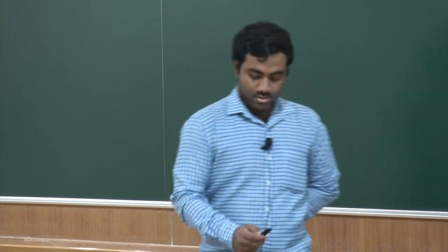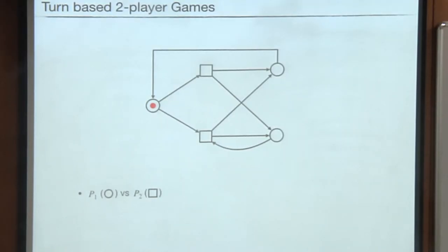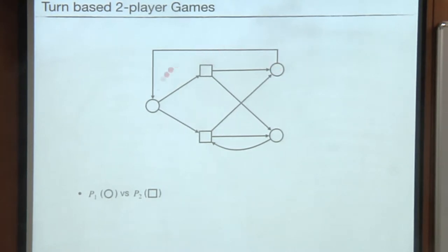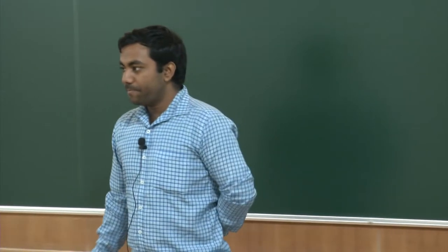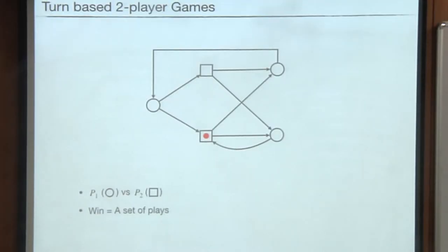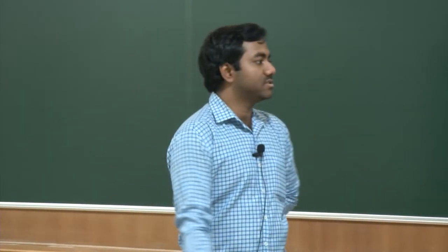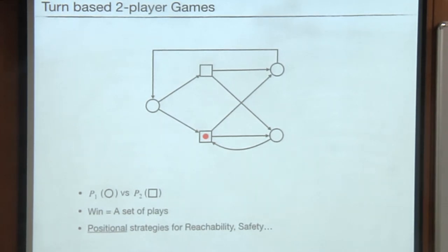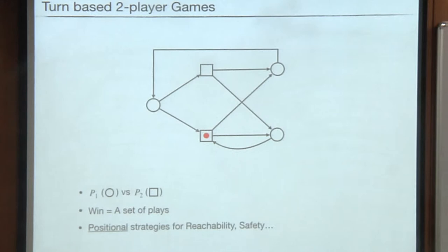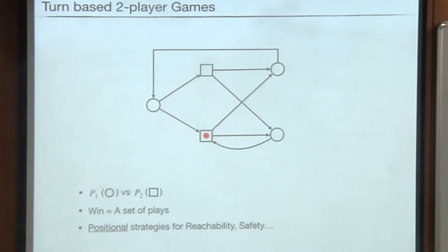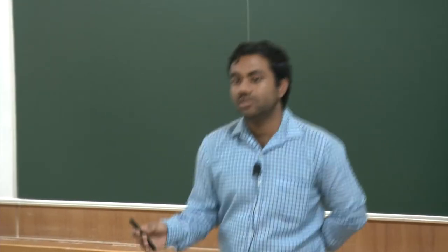The game starts from some initial vertex — for example, a player 1 vertex — and player 1 will choose to go to one of the adjacent vertices. Then if it is player 2's vertex, player 2 will choose the next one, and so on. This is called a play. A winning objective is given for player 1 as a set of plays, and we check if there exist winning strategies. It is well known that positional winning strategies suffice for conditions like reachability and safety — meaning a player's strategy does not depend on the past history.